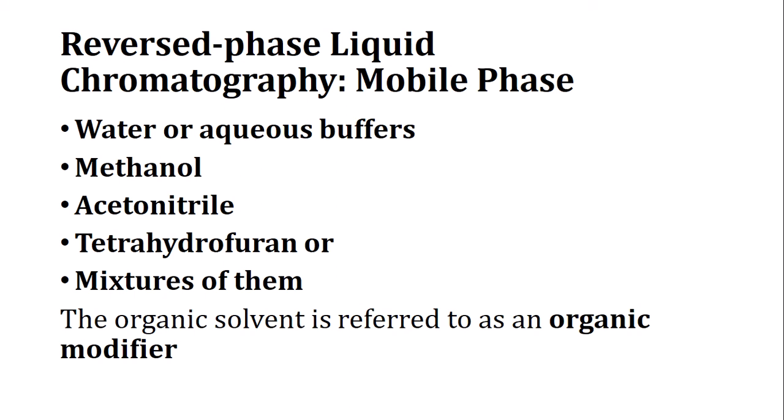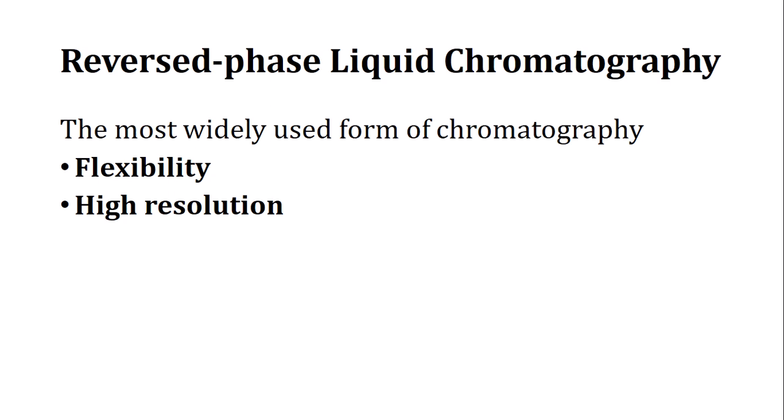For the mobile phase in reversed phase liquid chromatography, polar solvents are used — water, methanol, acetonitrile, tetrahydrofuran, or mixtures of these. The organic solvent component is called the organic modifier. This technique offers good resolution and flexibility, which is why it is widely used.